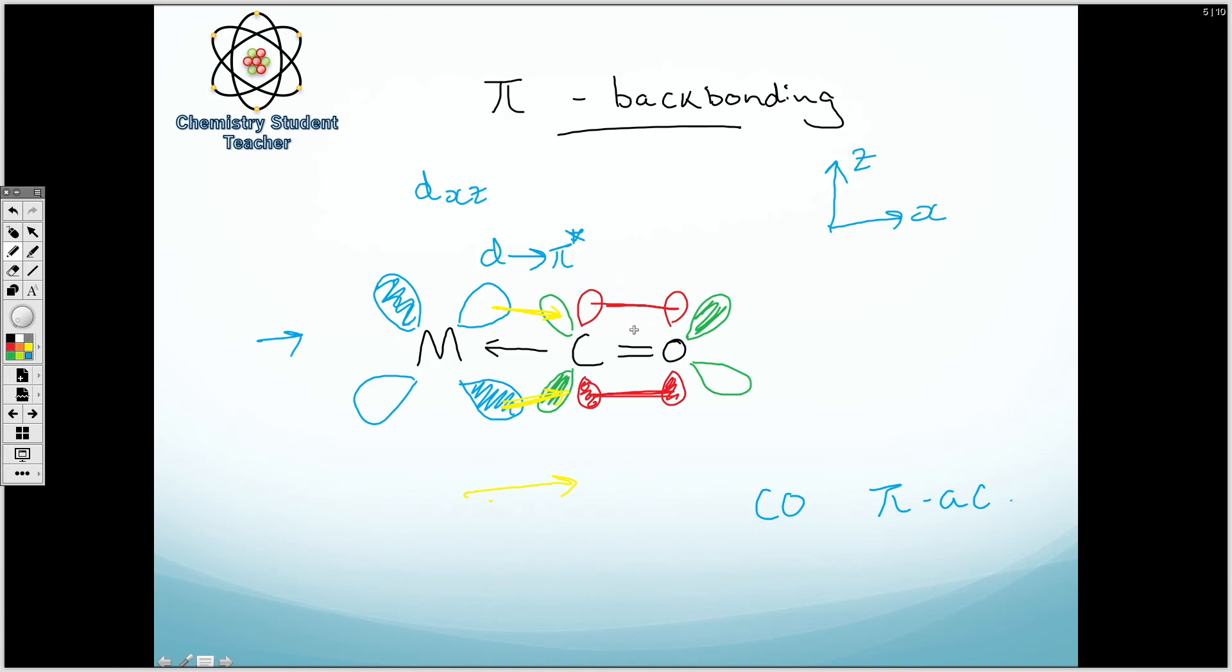And to be honest, that's all there is about carbonyl bonding. We've got a sigma bond, as a recap, going from the lone pair on the carbon to the metal centre there.